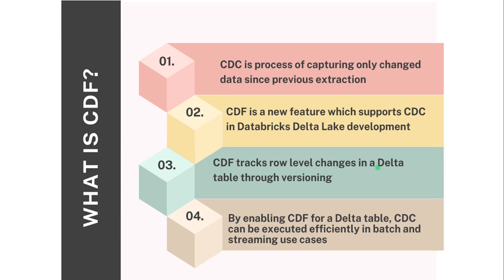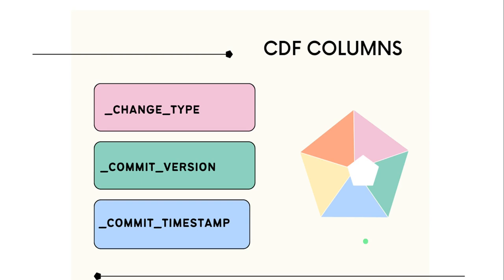CDF tracks row-level changes applied to the delta table through the concept of versioning. By enabling CDF for a particular delta table, we can process only the changed data since our previous execution. This is suitable for both batch and streaming use cases. Whenever we enable Change Data Feed for a particular delta table, it creates internally another table or view that maintains additional columns: change type, commit version, and commit timestamp. The change type tells you for each record what operation occurred — if a record was newly inserted, the change type will be 'insert'; for a deleted record it will be 'delete'.